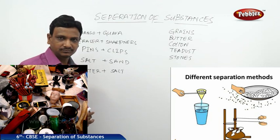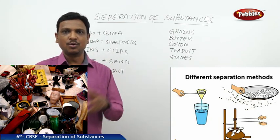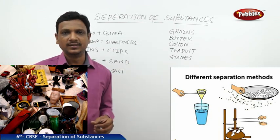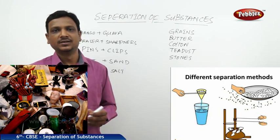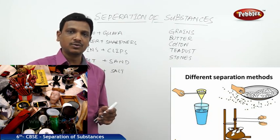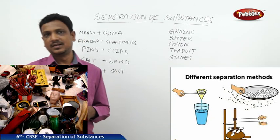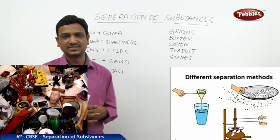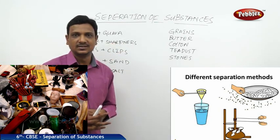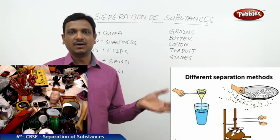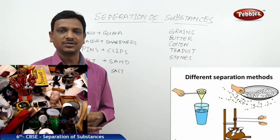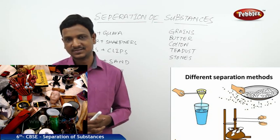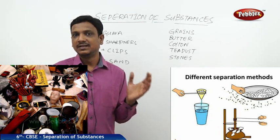Here we have mango and guava in a basket. Why are methods required? Simply you can identify what is mango and what is guava — you can hand pick and sort them, taking the mangoes into one basket and the guavas into another. So we don't need any methods there. Similarly, erasers and sharpeners kept in a bowl — you are asked to take the erasers out. You can easily separate them by hand picking. There is no need of a special separation method.